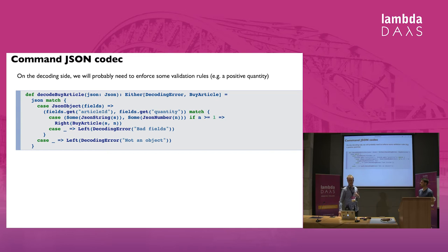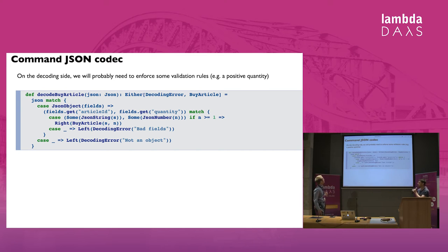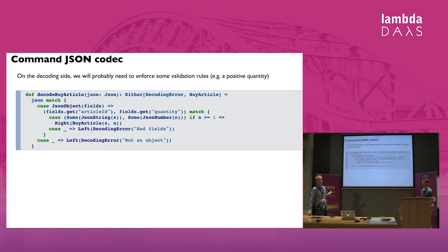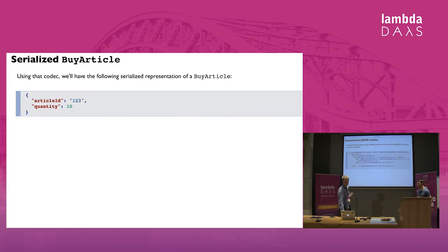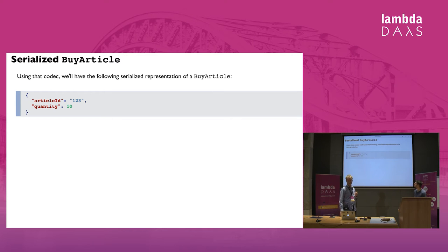Nobody does it manually like this — there is a pattern in many libraries. The return type will be an Either type where we either get a decoding error or we get the BuyArticle command. And if we serialize it, that might be the JSON representation we get.